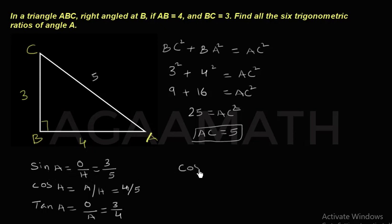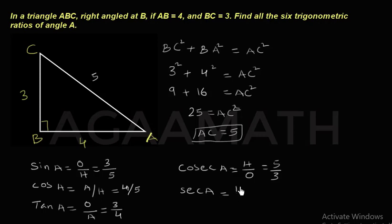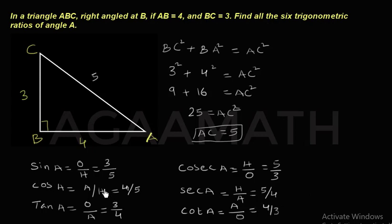The reciprocal of sine A is cosecant A. Cosecant A is hypotenuse by opposite, that is 5 by 3. The reciprocal of cos A is secant A — that is hypotenuse by adjacent, which is 5 by 4. And cot A is the reciprocal of tan A, which is adjacent by opposite, so that equals 4 by 3. Those are all six trigonometric ratios.